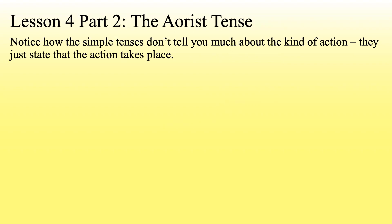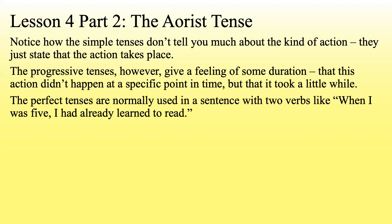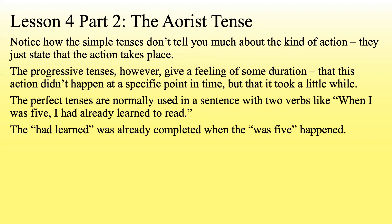Notice how the simple tenses don't tell you much about the kind of action — they just state that the action takes place. That's going to be important because the aorist is a simple tense. The progressive tenses give a feeling of some duration, that the action didn't happen at a specific point in time but took a while. The perfect tenses are normally used in a sentence with two verbs, like 'when I was five, I had already learned to read,' giving the idea of something being completed.